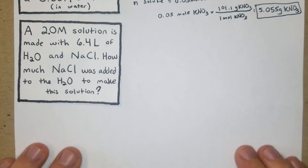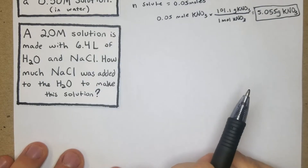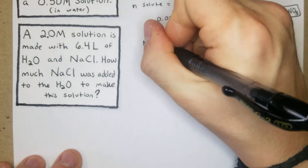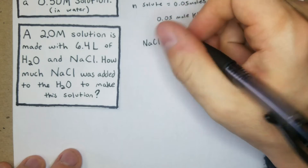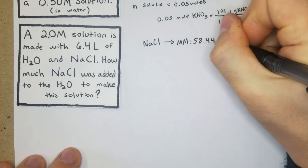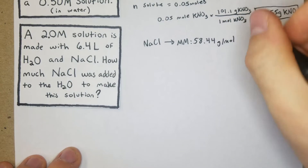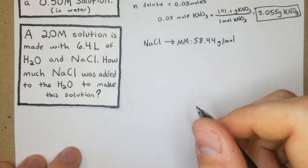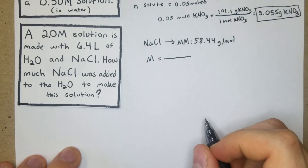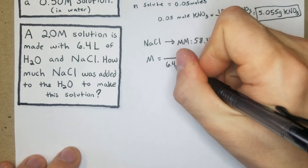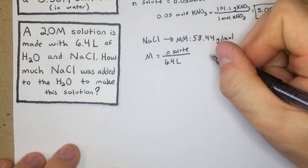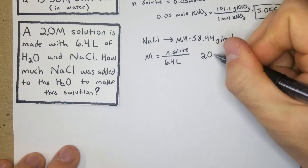Problem 2: a 2 molar solution is made with 6.4 liters of H₂O and NaCl. How much NaCl was added? NaCl has a molar mass of 58.44 grams per mole. Using the molarity equation — moles of solute per liter of solution — we know we have 6.4 liters and need to find moles of solute.